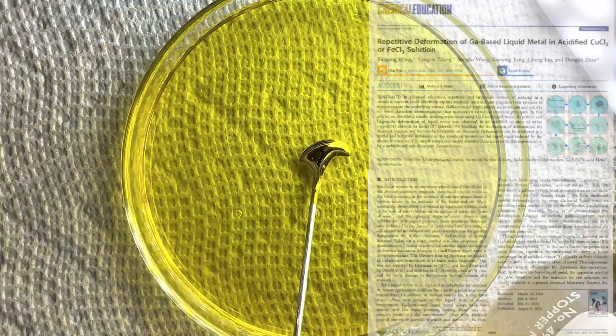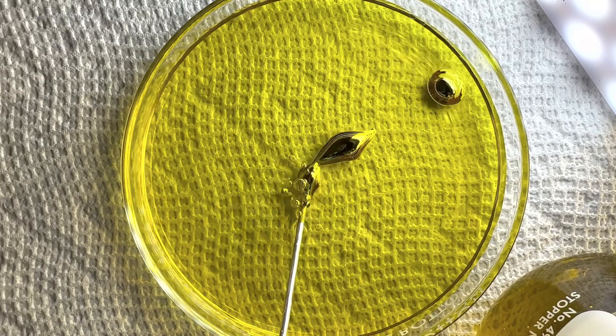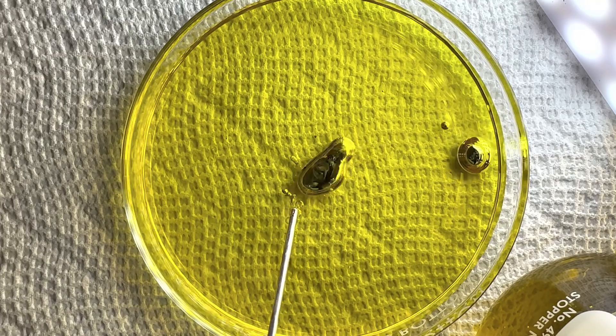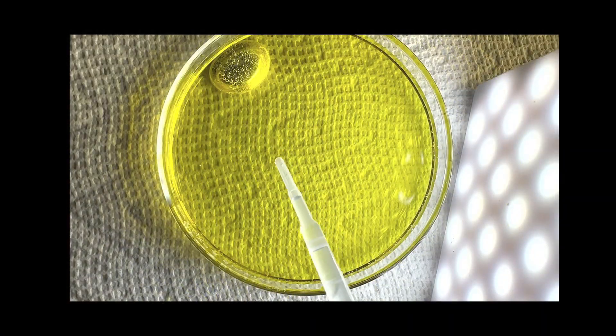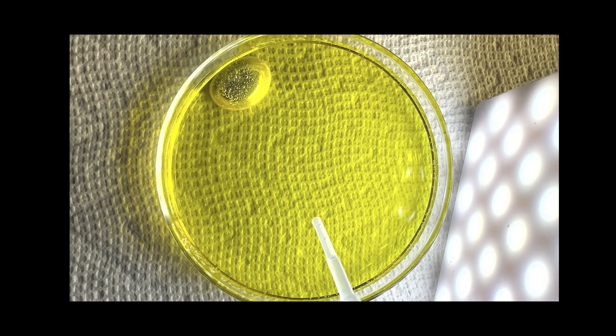So this made me wonder if I could lower the acid concentration in the solution to slow down the undulations long enough so that they'd persist. I figured the easiest way to do this was just to add some water to the Petri dish.